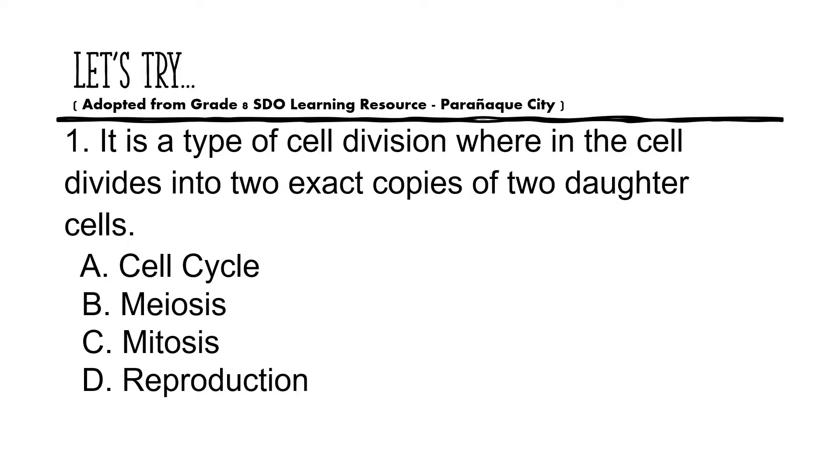Answer now the let's try part of your module. Number one: it is a type of cell division wherein the cell divides into two exact copies of two daughter cells. A. cell cycle, B. meiosis, C. mitosis, D. reproduction.